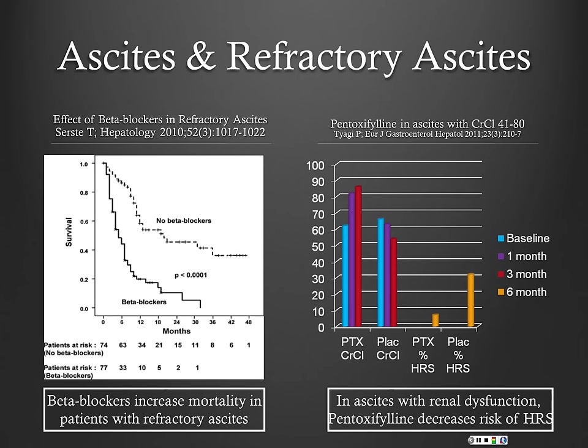There's a paper about to be published in GUT. The abstract suggests that patients on the transplant list, even with refractory ascites, actually do better on non-selective beta blockers — so that may change our thought process, but we're still waiting to see the full data.